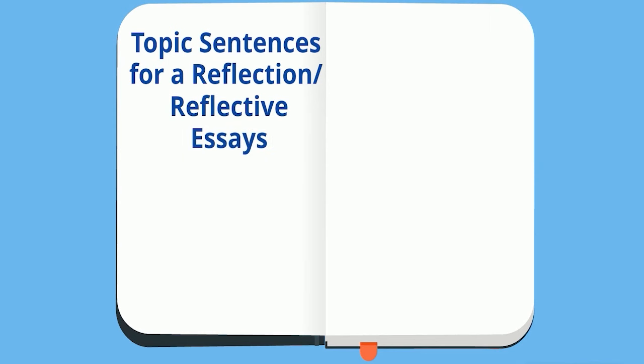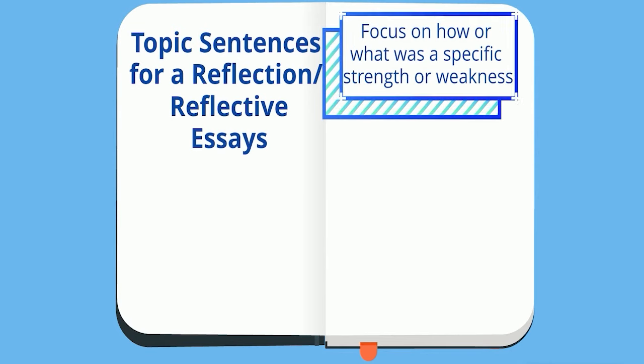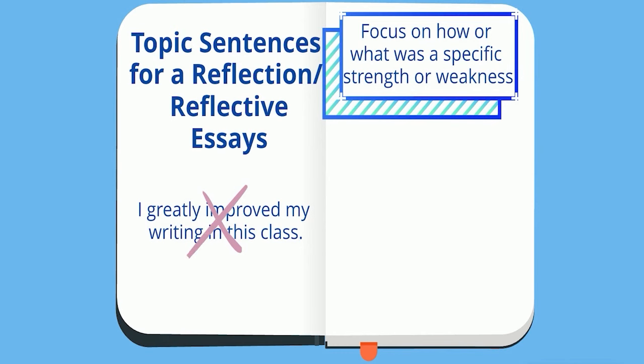Finally, in a reflective essay in which you're reflecting on yourself as a writer, make each topic sentence about a particular improvement or weakness, or about a specific assignment that demonstrates a strength or weakness. For example, instead of 'I greatly improved my writing in this class,' better topic sentences state how or what was improved.